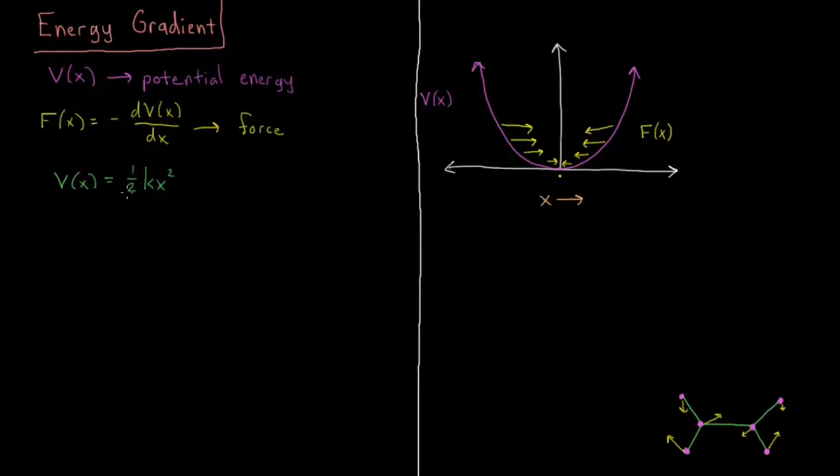So we have, that's our V, so minus dV dx. Minus dV dx, with respect to x, one-half kx squared is going to be kx, so minus kx for the minus sign.